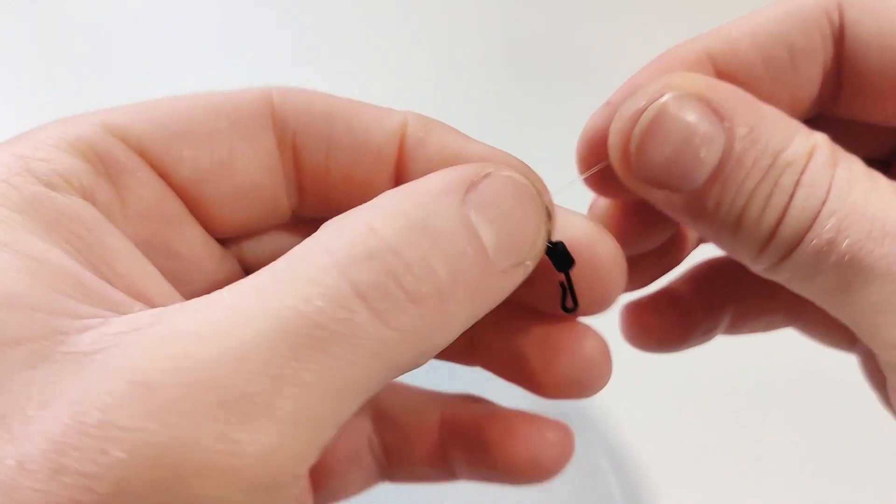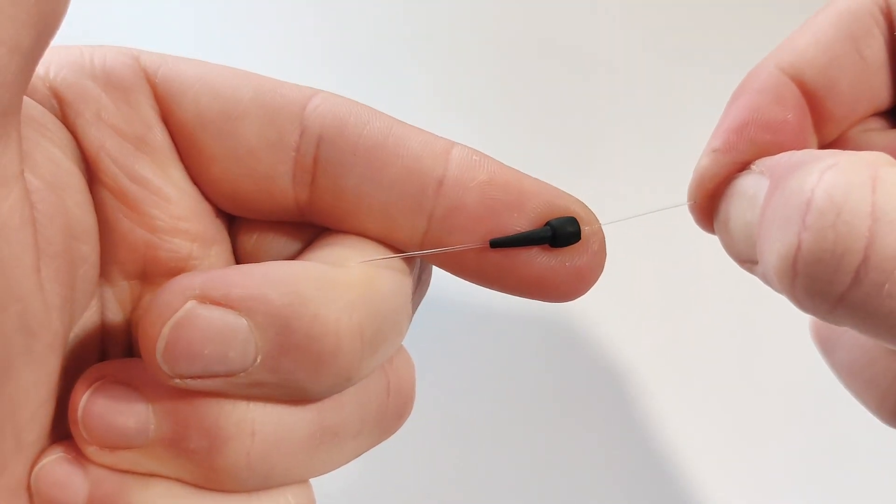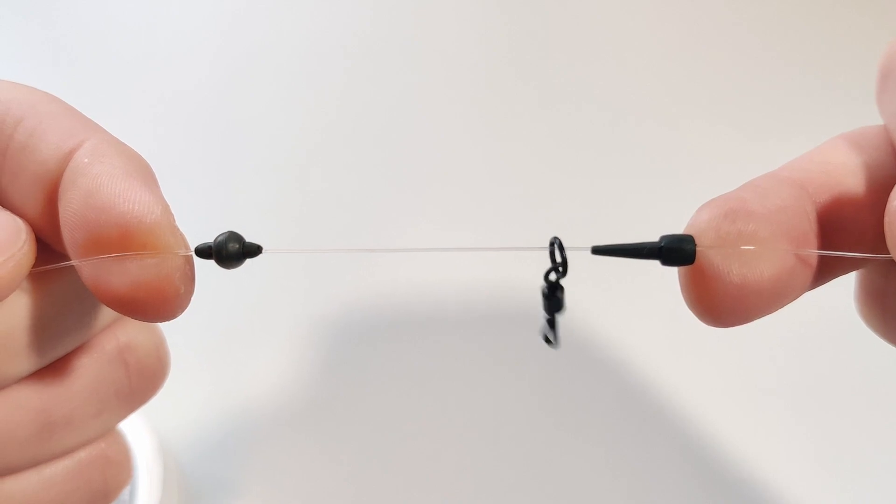Next thread on your quick change ring swivel, followed by the line saver bead. Your leader should now start to look something like this.